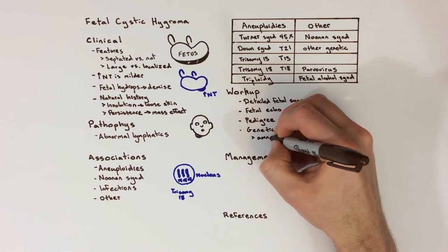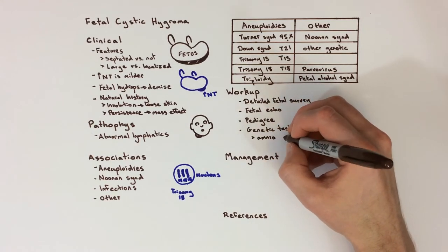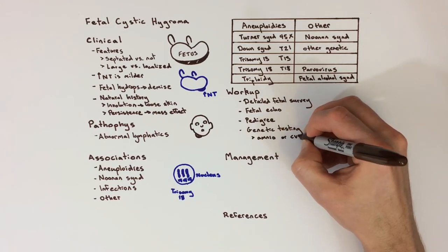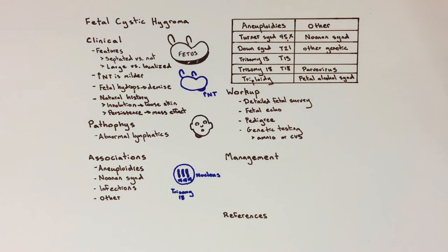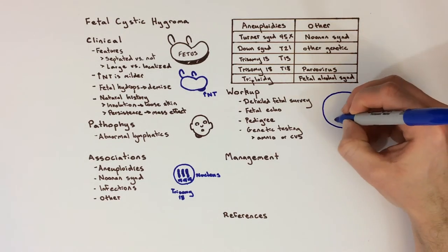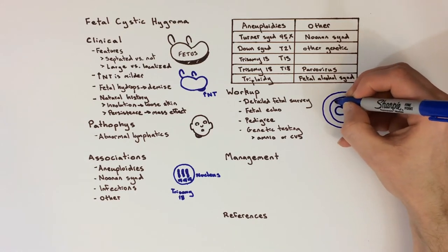CVS is where a piece of the placenta is obtained using an ultrasound-guided needle, and amniocentesis is a similar procedure that instead collects amniotic fluid, which contains shed fetal skin cells. The sample is used to do a microarray, a genetic test which can identify missing or extra chromosomes, and missing or extra pieces of chromosomes.